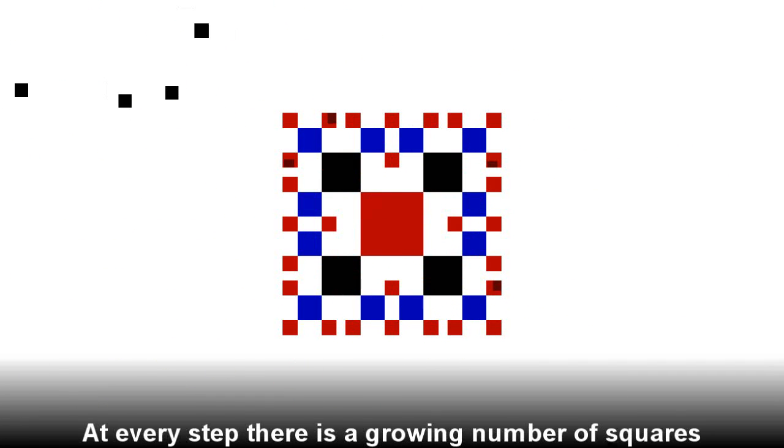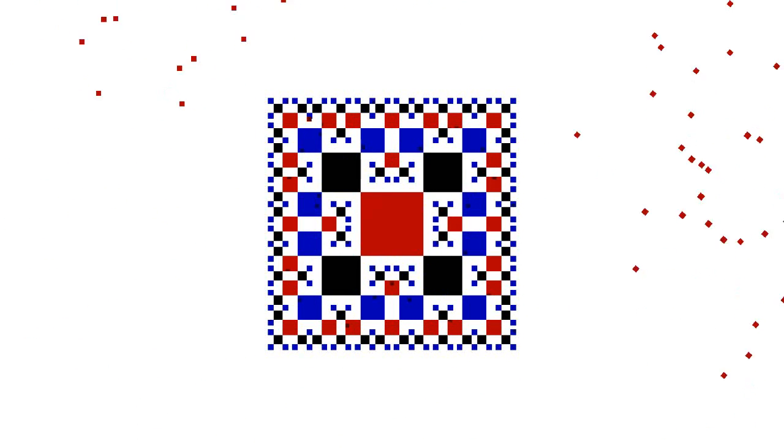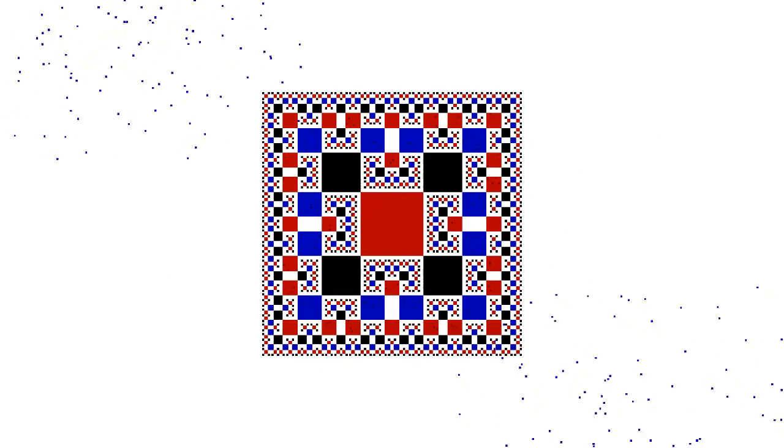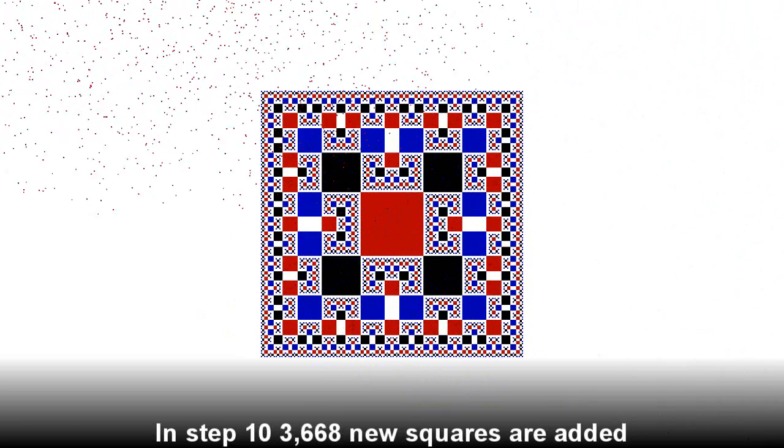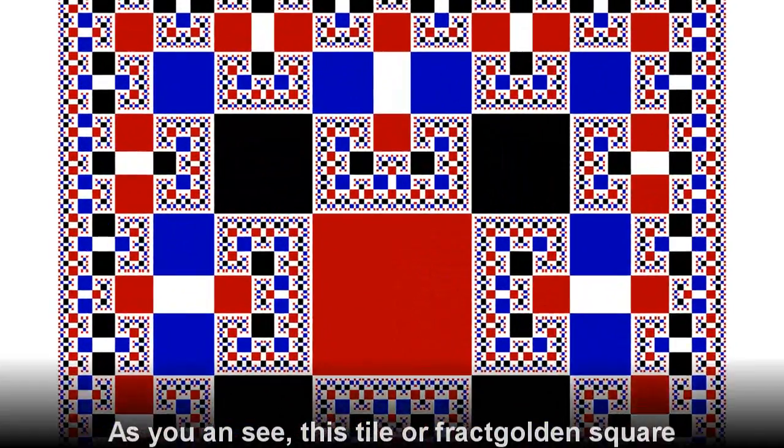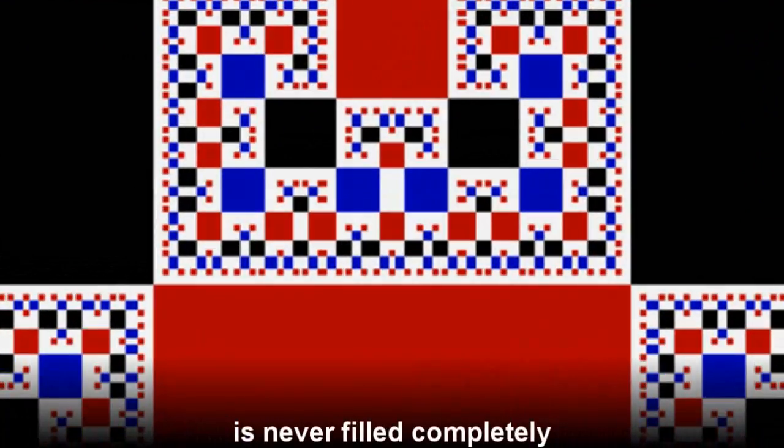At every step, there is a growing number of squares. In step 10, 3668 new squares are added. As you can see, this tile of a golden square is never filled completely.